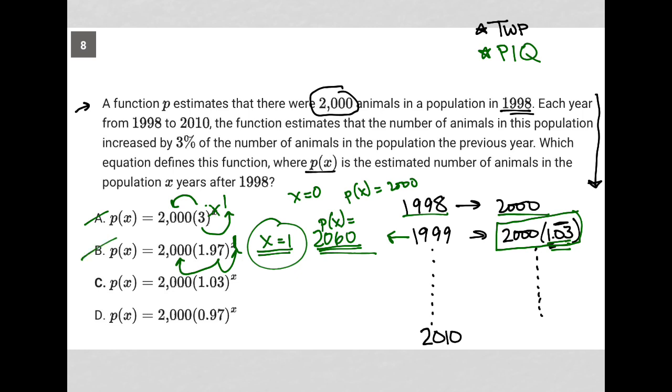Choice C looks like what I actually want. If I put a 1 here, then 1.03 to the first power is 1.03. And then 2,000 times 1.03, I already did that math. And I did that math, and it resulted in this equaling 2,060, which is exactly what I want.